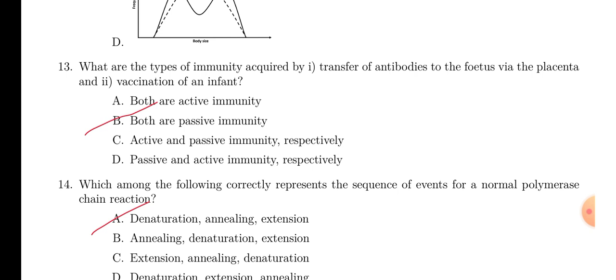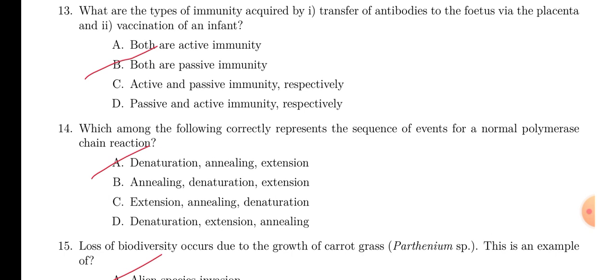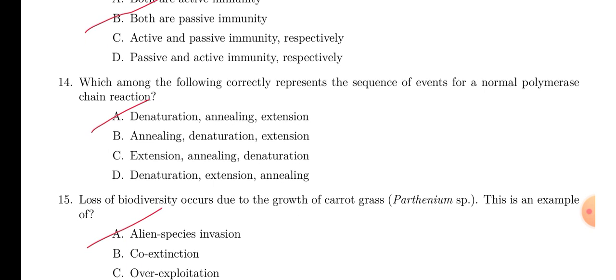Now, the next question, question number 13. So, that is the immunity, where transfer of antibodies occur to the fetus from placenta and through vaccination. So, both are actually passive immunity. You all know that. It is very easy question.